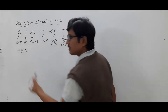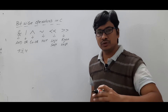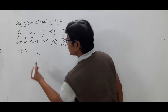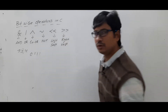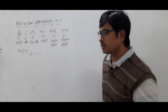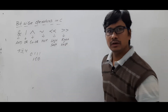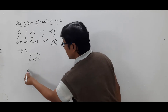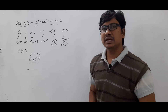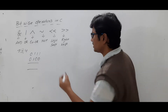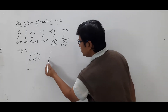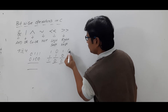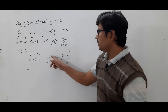Let me explain with an example: 7 bitwise AND 4. Represent 7 in a four-bit register — it is 0111. Convert 4 into binary, which is 0100. Now perform the bitwise AND between them. Remember: the bitwise AND operator gives output 1 only when both inputs are 1. If any one of them is 0, you will get 0.